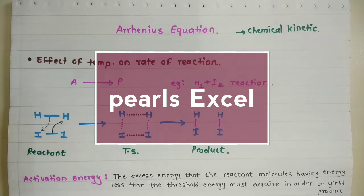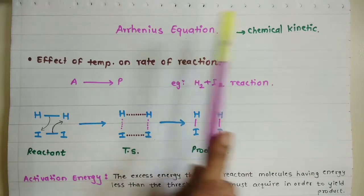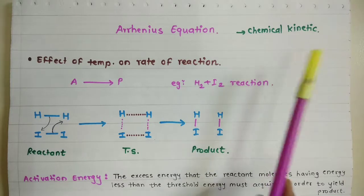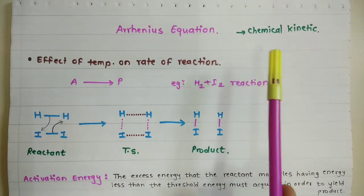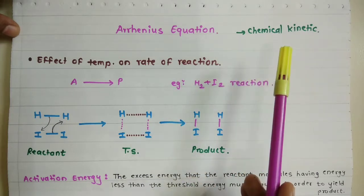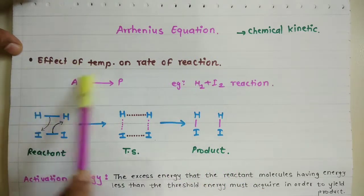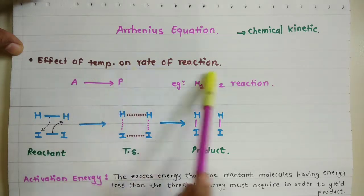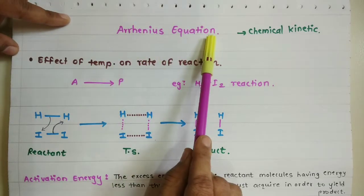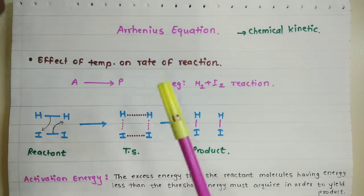Welcome to Pulse XA. Today in this session we are going to discuss the Arrhenius equation from the chemical kinetics chapter. As we are all aware, the chemical kinetics chapter deals with rates of reaction, rate constant, order, and molecularity of reaction. When we talk about rates of reaction, there is one more important factor which is temperature. The equation we get when studying the effect of temperature on the rate of reaction is known as the Arrhenius equation.